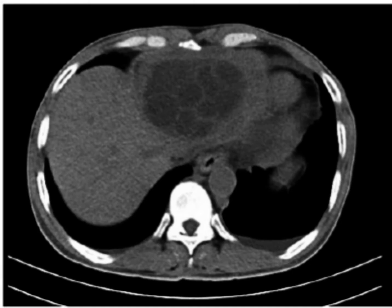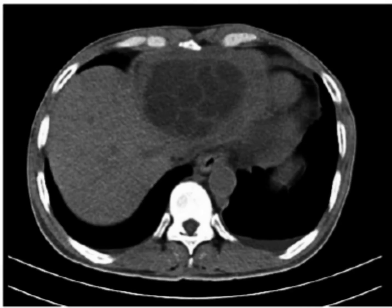This is a CT scan of the abdomen showing the hydatid cyst. You can clearly see a smooth space-occupying lesion containing free-floating septas. I have marked the lesion with the red marker and the septas with a blue marker so you can better differentiate them.